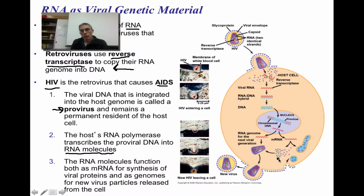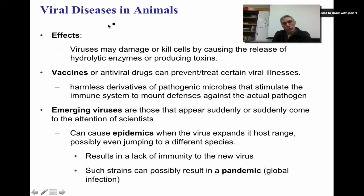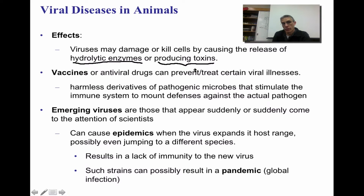Since this is considered a lysogenic cycle, it's not going to destroy the host cell — it's simply going to release those viral particles into the environment so they can go and infect new cells. Viral diseases in animals can have various effects. Most viruses that infect animals are either going to damage or kill the cells by causing the release of hydrolytic enzymes, or they could harm the cells by producing various toxins within that cell.